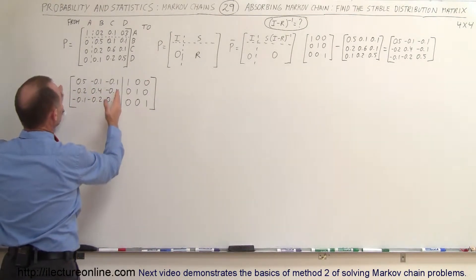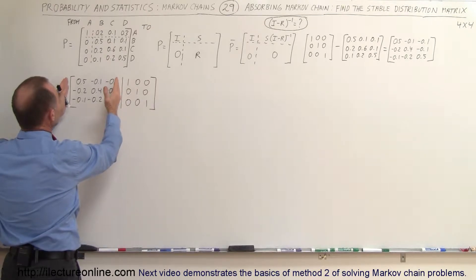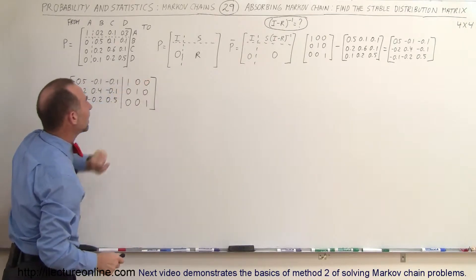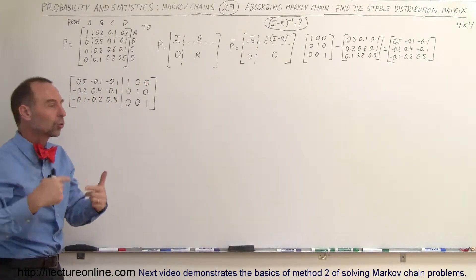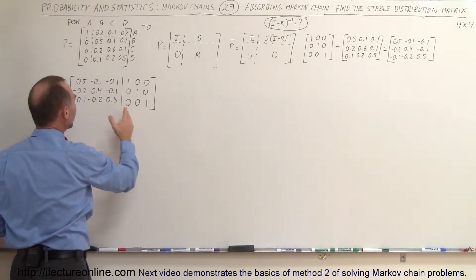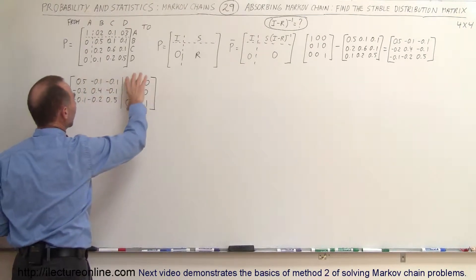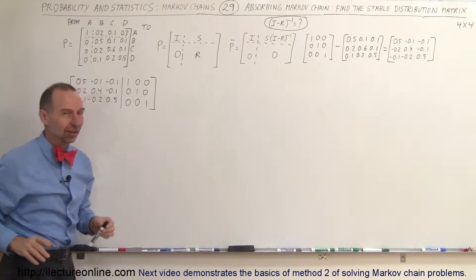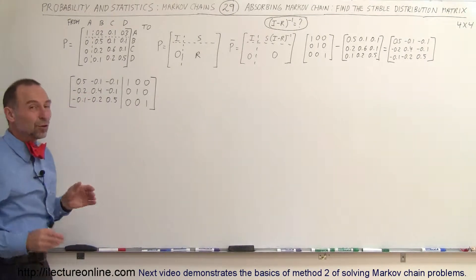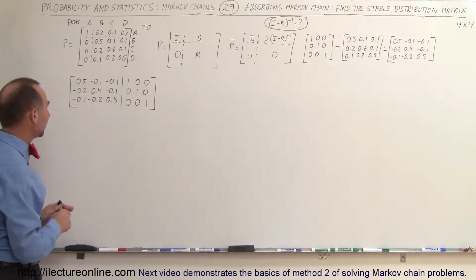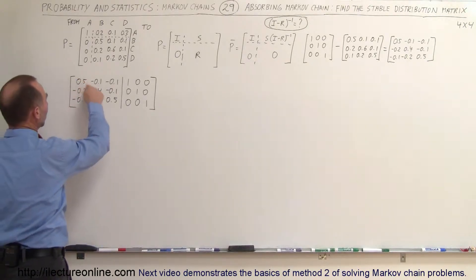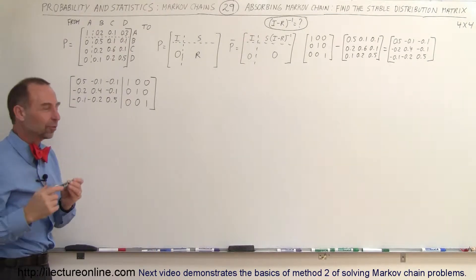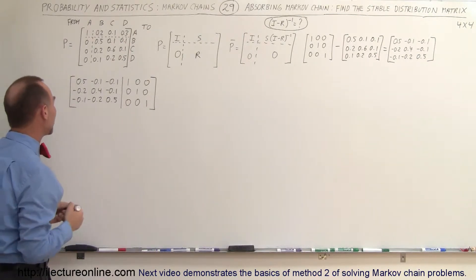What we've done is paired up the difference between the identity matrix and the R matrix alongside an identity matrix. We're going to go through a methodology to turn the left side into the identity, and the right side will become the inverse of the left side. To accomplish that we use what we call the Gauss-Jordan elimination method, which means we need 1s across the diagonal and 0s everywhere else.